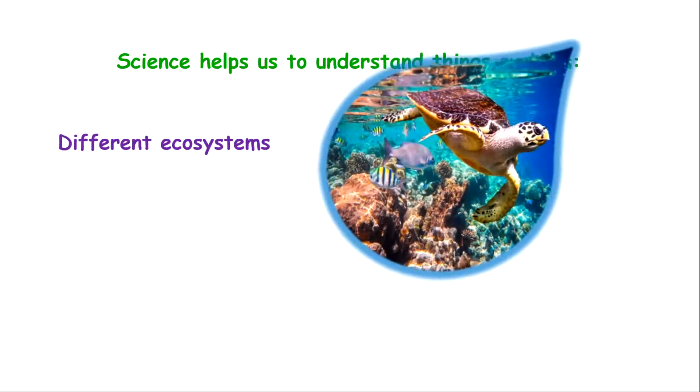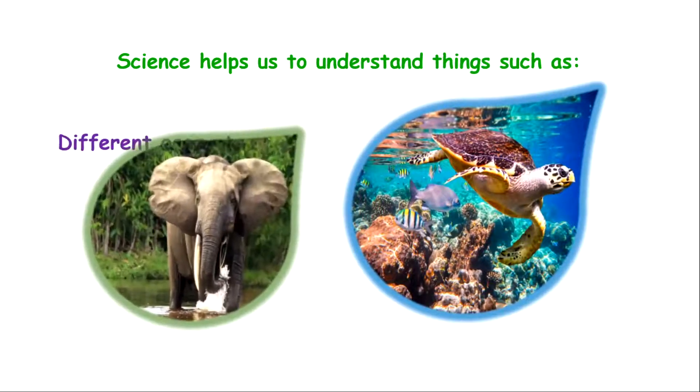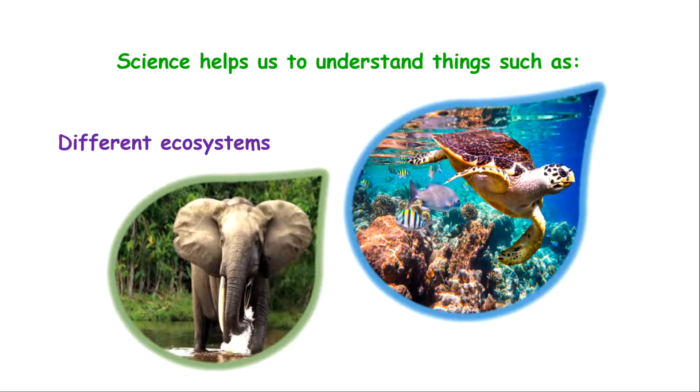Science also helps us to understand different ecosystems, talking about terrestrial ecosystems and marine ecosystems. Science helps us to understand the components of each ecosystem, how organisms interact and behave within the ecosystem, and helps us to understand the role of each organism in the ecosystem.